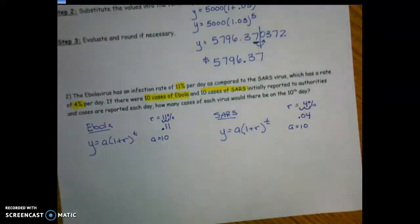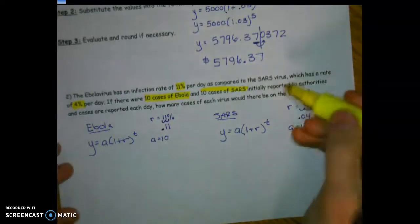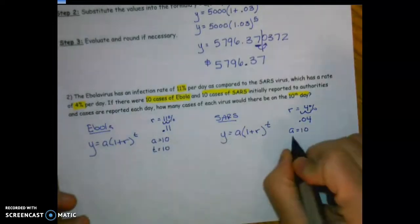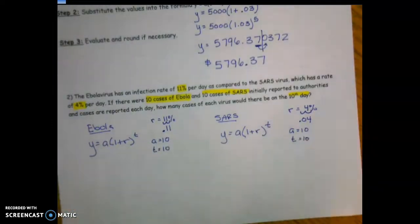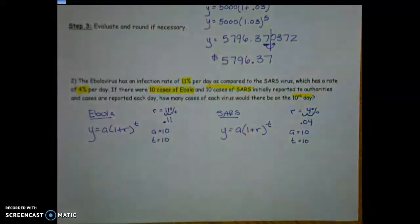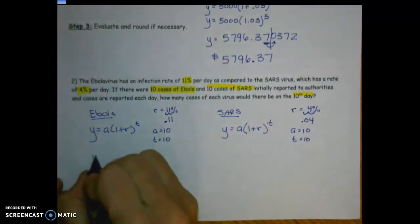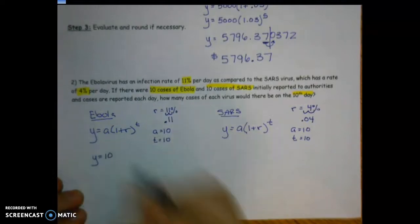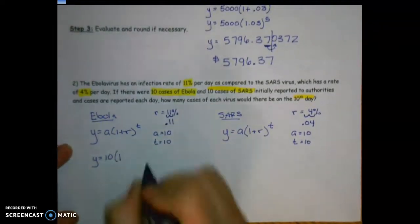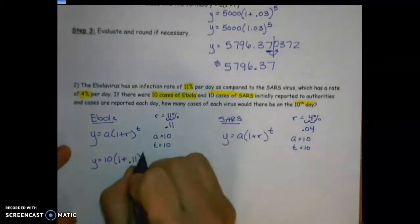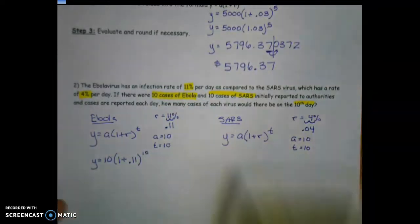We want to know how many cases on the 10th day, so t = 10 for both. Pause the video, plug your values in, put it in your calculator, then press play. For Ebola: y = 10(1 + 0.11)^10.